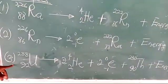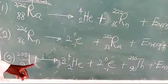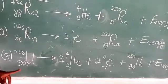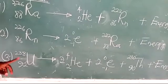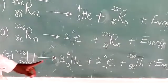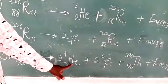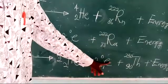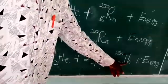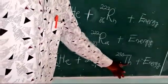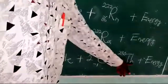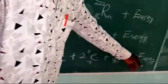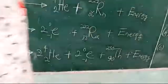The third example we have here is for uranium-238, with a mass of 238 and atomic number 92. It emits two alpha particles and then two beta particles, and then you have a daughter atom, thorium, with a mass of 230 and an atomic number of 90, and again energy is released.